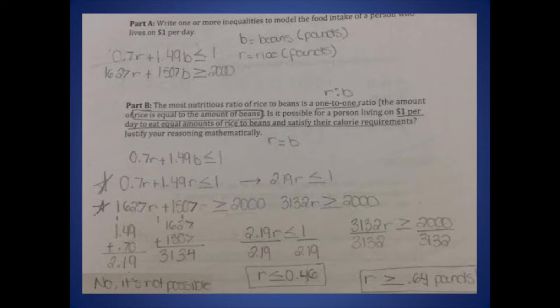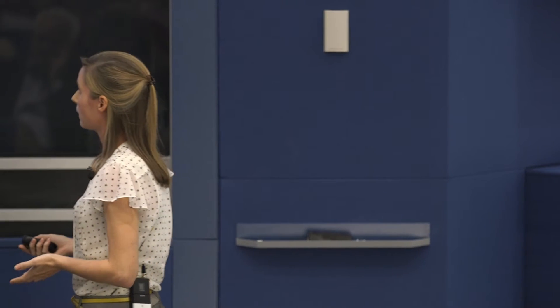Students found it is actually possible to satisfy both inequalities if your solution is heavily based on rice. We pushed further: the most nutritious ratio of beans and rice is a one-to-one ratio, so students looked at whether it's possible to satisfy these inequalities with a one-to-one ratio. This was an 'aha moment' — it is not in fact possible to satisfy both inequalities. The reality for a person living under the constraint of one dollar a day is that they have to make a choice between calories and nutrition.